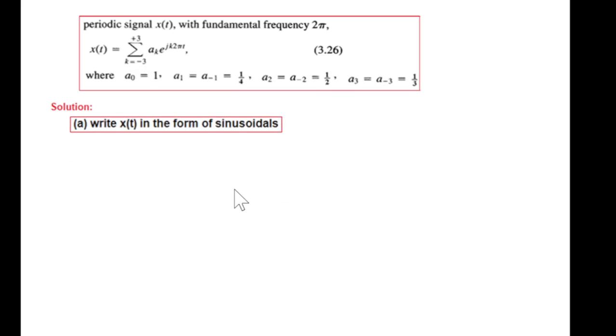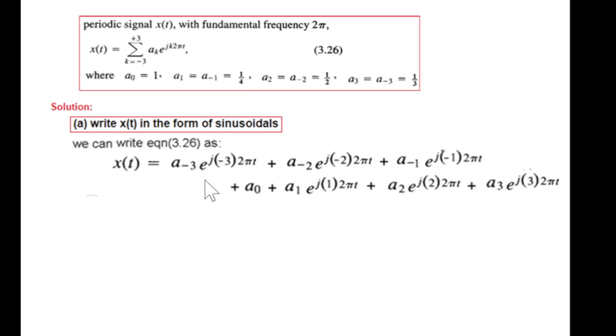To write it in form of a sinusoidal, we open this equation. First of all we put k equals minus 3, so we get this term. Then k equals minus 2, we get this term, and similarly all the values of k from minus 3 to plus 3, so we get this equation.